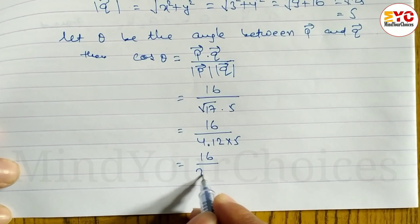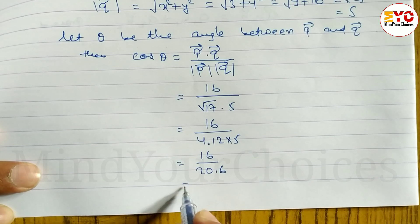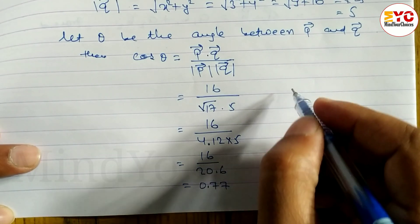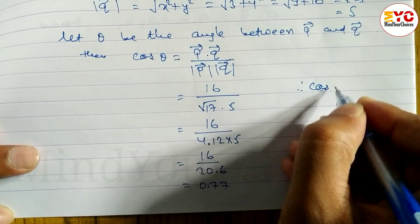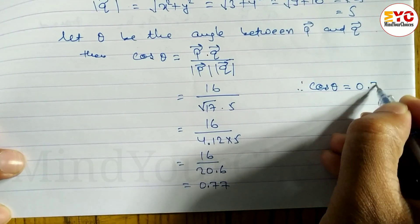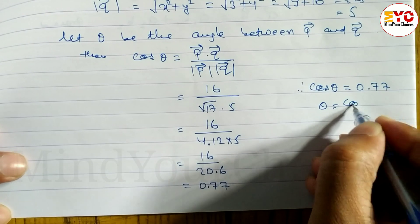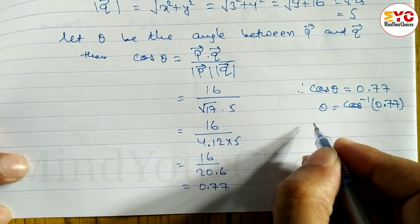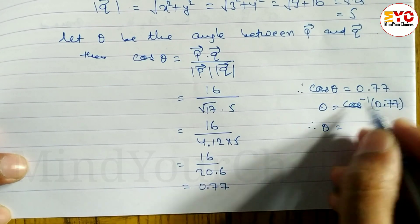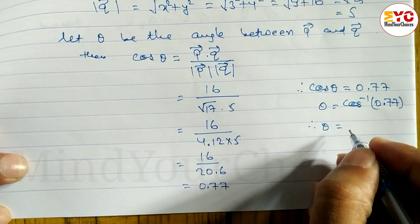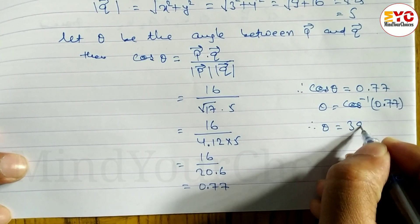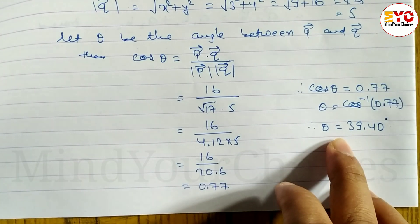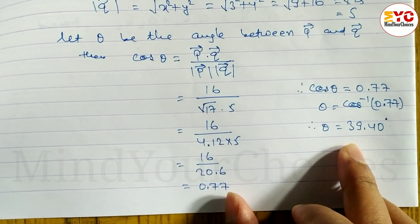16 divided by when you multiply these two, it is 20.6. Equals 0.77. Therefore cos theta equals 0.77. So theta equals cos inverse 0.77. Therefore theta equals 39.40 degrees. So angle between two vectors is equal to 39.40.